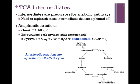One example is the pyruvate carboxylase reaction, which you may remember from gluconeogenesis. Pyruvate is carboxylated to form oxaloacetate in this process of gluconeogenesis, but also oxaloacetate is one of the intermediates in our cycle. Remember, anaplerotic reactions are separate from the TCA cycle — they simply provide us with more of the intermediates we need to keep the cycle going.